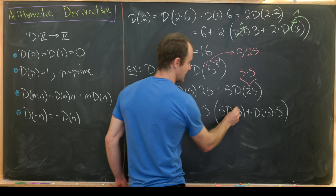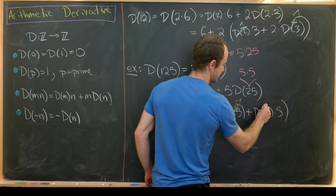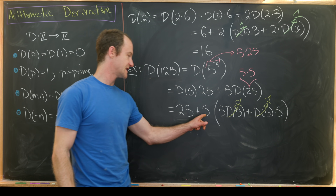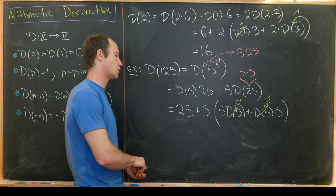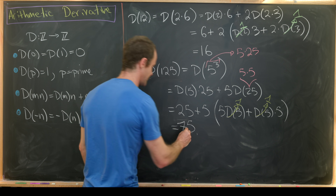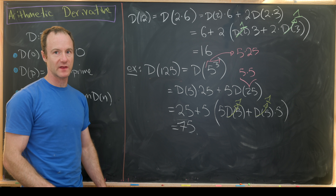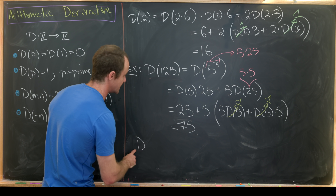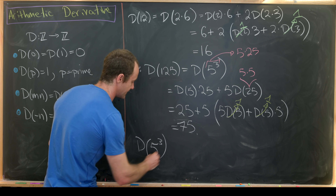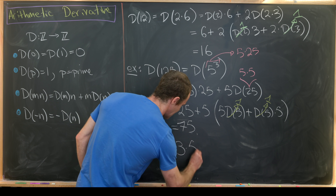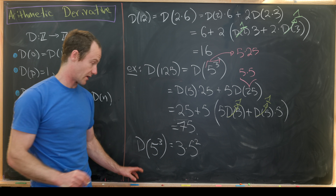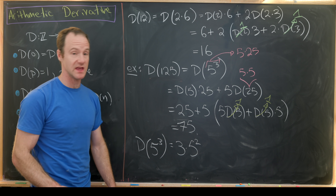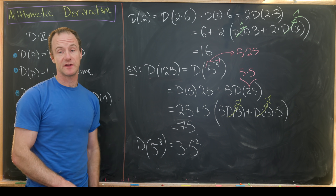Since d(5) equals 1 for both terms, we get 5 plus 5 equals 10, and then 10 times 5 is 50, plus 25 is 75. We'd like to relate this to the power rule from calculus: d(5³) equals 3 times 5 squared. The exponent came down and we reduced it by 1. And indeed 75 equals 3 times 25, so we're good.